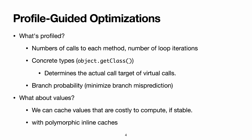So what's being profiled? First, the number of calls to each method and the number of loop iterations. Counting the loop iterations is necessary because even if a method is called only once, if there's a loop that performs millions of iterations, you want to optimize it as soon as possible.